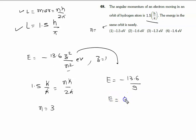So here is the E value. It is minus 1.511 electron volt. So the right answer to this problem is option 1, it is minus 1.5 electron volt.